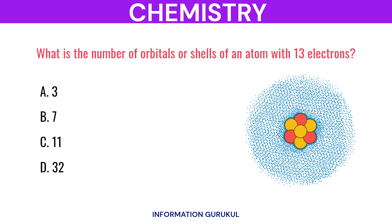What is the number of orbitals or shells of an atom with 13 electrons? Three.